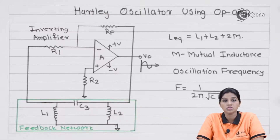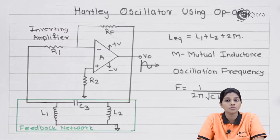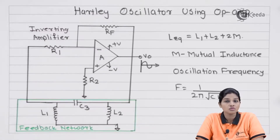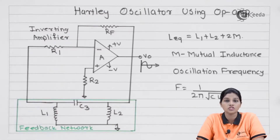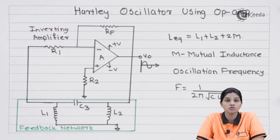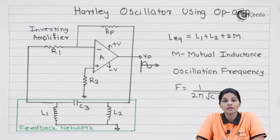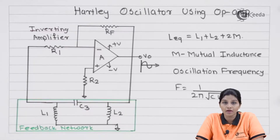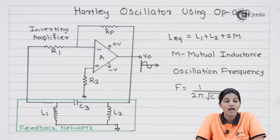For the circuit to work as an oscillator, the amplifier circuit is required to provide a phase shift of 180 degrees. According to Barkhausen's criteria, the total phase shift is required to be 0 or 360 degrees, or an integral multiple of 360 degrees. So we require one more circuit that can introduce an additional phase shift of 180 degrees, so that the total phase shift around the loop becomes 0 or 360 degrees. In the Hartley oscillator, the feedback circuit introduces a phase shift of 180 degrees.